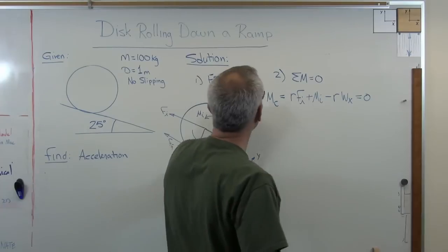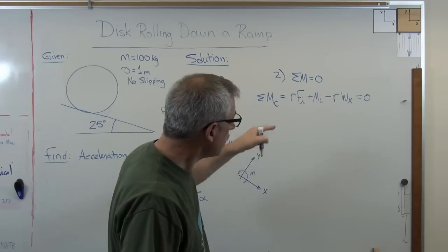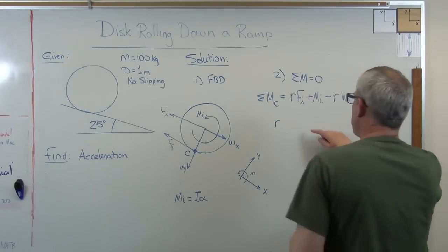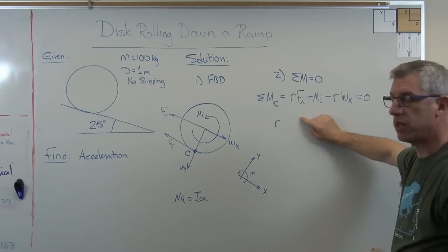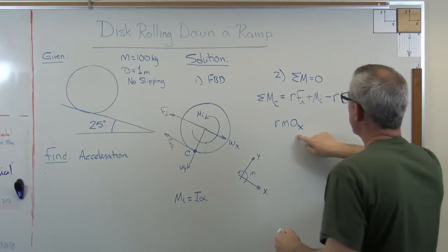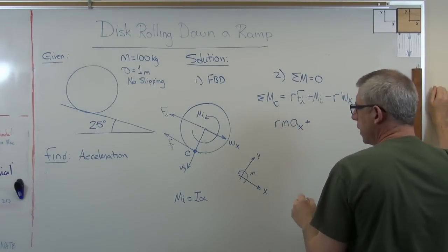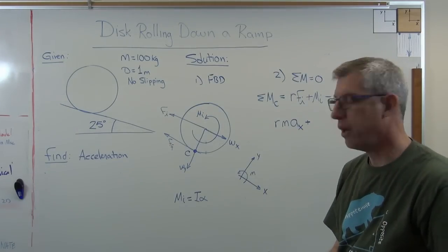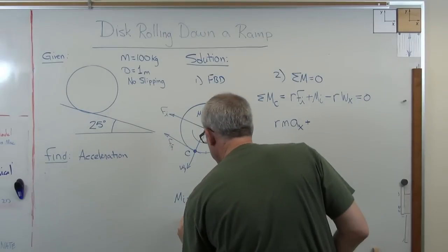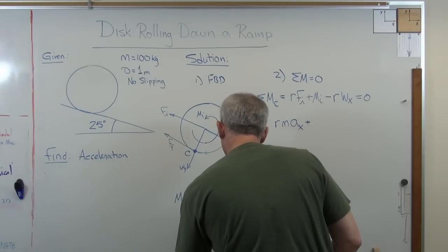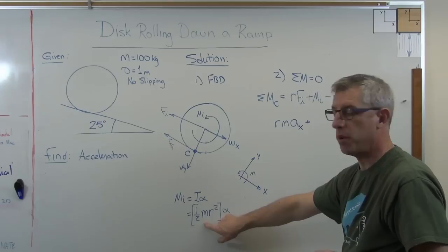So we're in good shape. All we've got to do is now start expanding that out and we're going to get the answer. So R, the inertial force right there is mass times acceleration. So it's M times acceleration. And this is the X direction we're going. So let's write A sub X.